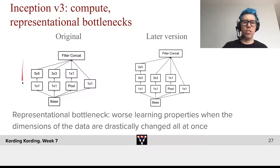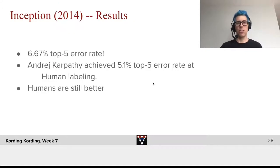There are certain representational bottlenecks. It's often the case that you have worse learning properties when the dimensions of the data are drastically changed all at once, which happened in the original version. They then replaced it with a later version, where the 5x5 has been replaced by two subsequent 3x3 layers. But it's still the general idea. We basically want these different architectures, not choose one but have all of them, concatenate them, and allow gradient descent to choose how important each of these channels should be.